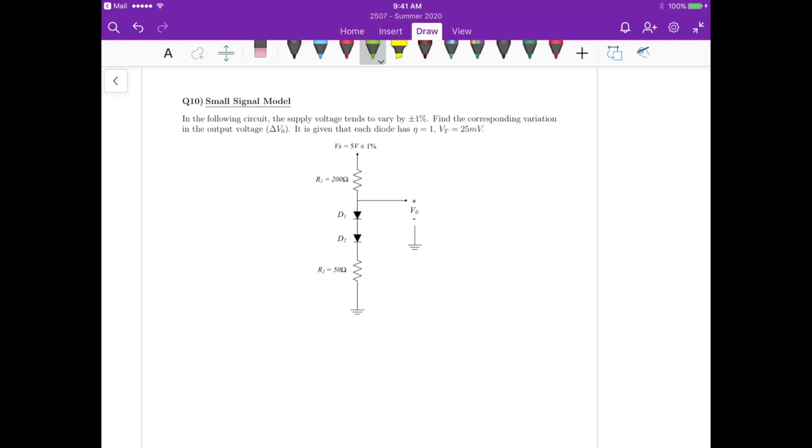We need to find the corresponding variation in the output voltage delta V out, and it is given that each diode has an ideality factor of one and a thermal voltage of 25 millivolts.